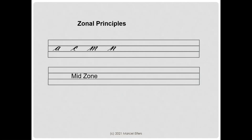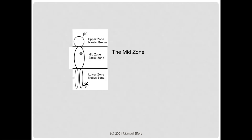In a previous video, I showed the mid-zone containing letters A, C, M, and N, for instance. Anything above the mid-zone is the upper zone, and anything below is the lower zone. We linked the mid-zone to reality — the here and now, the present — whereas the upper zone is the mental realm and the lower zone is our needs zone.